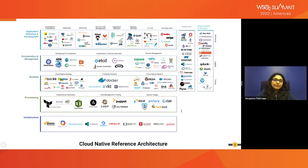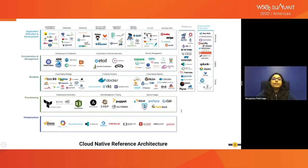Next we have the runtime layer. It mainly consists of three components: CRI — the container runtime interface, CNI — the container network interface, and CSI — the container storage interface. CRI allows us to plug different implementations of the container runtime; Docker is a widely used container runtime. CNI provides APIs to plug different network interface implementations. CSI provides a common standard to connect different container orchestration platforms to different persistent storage.